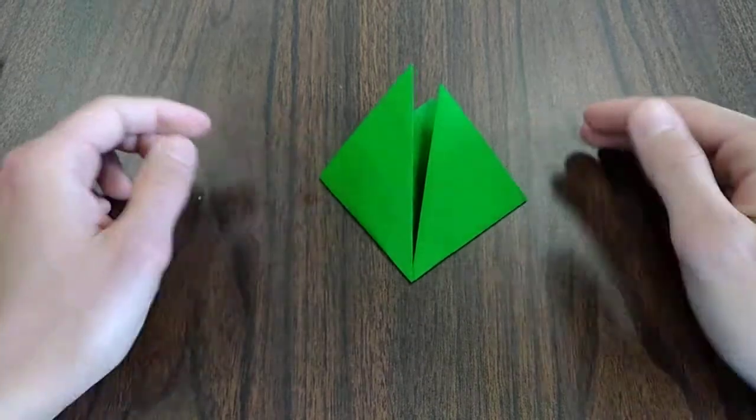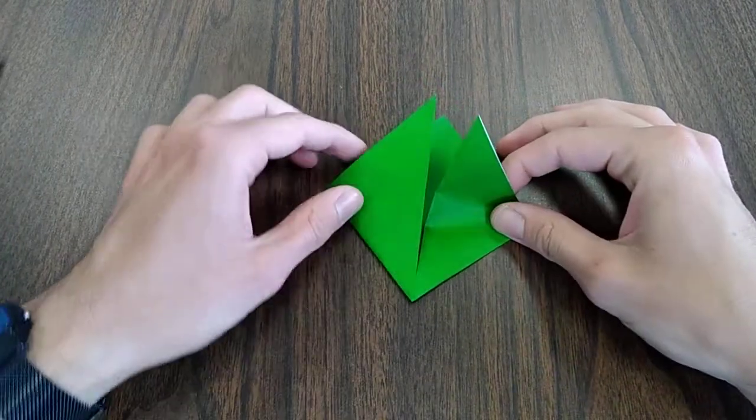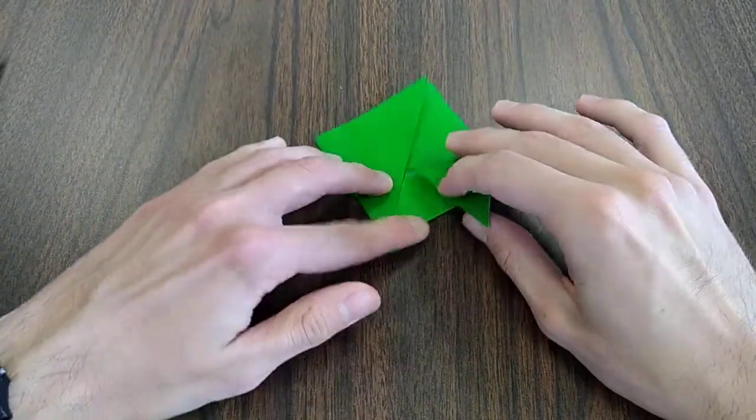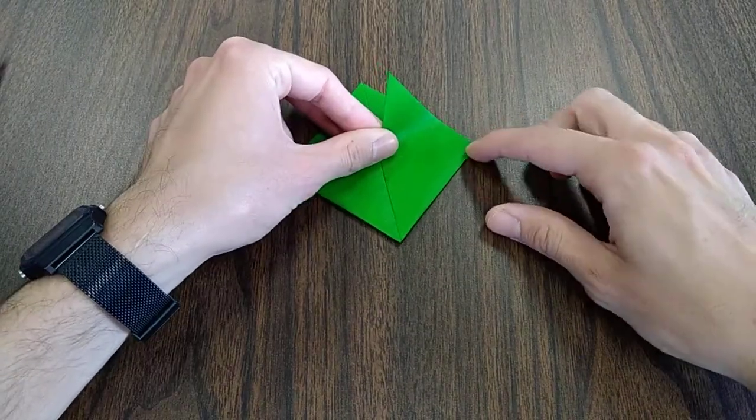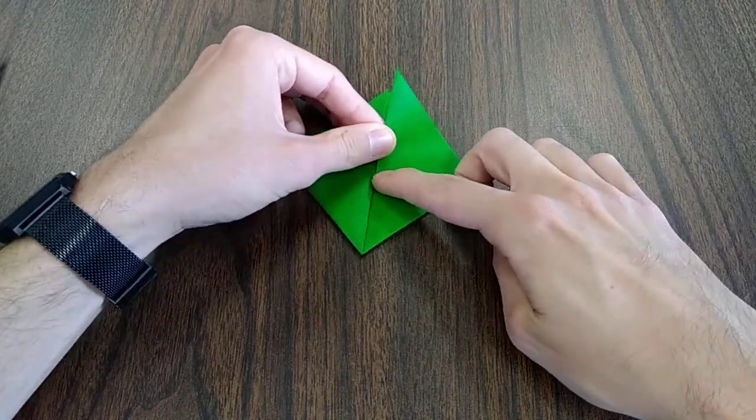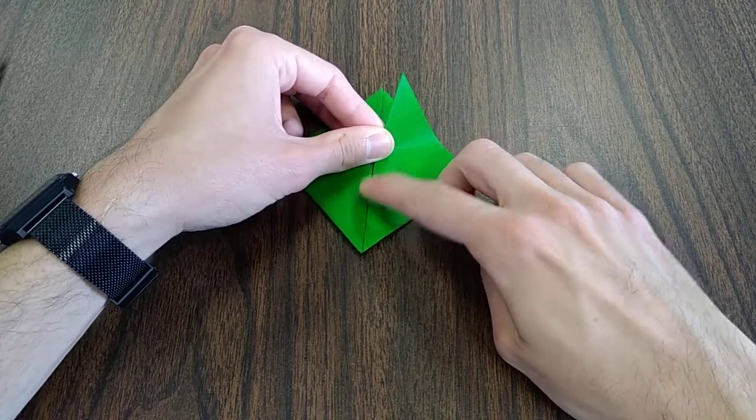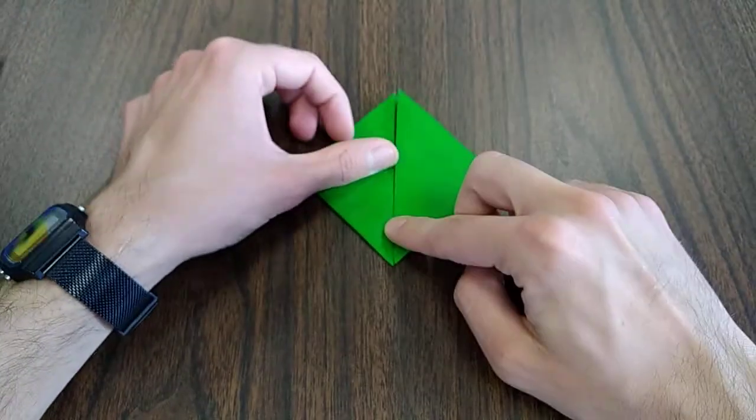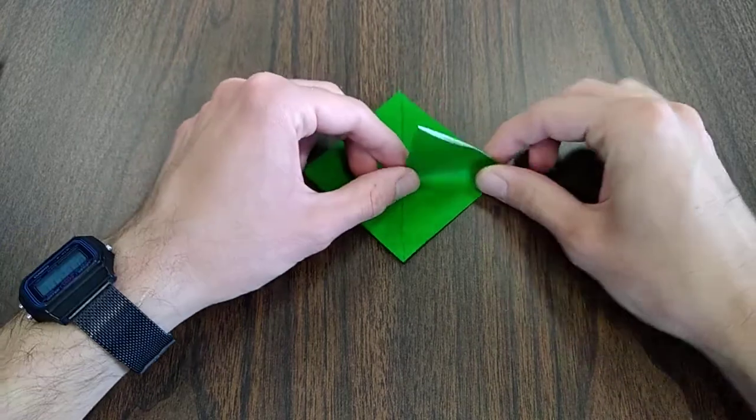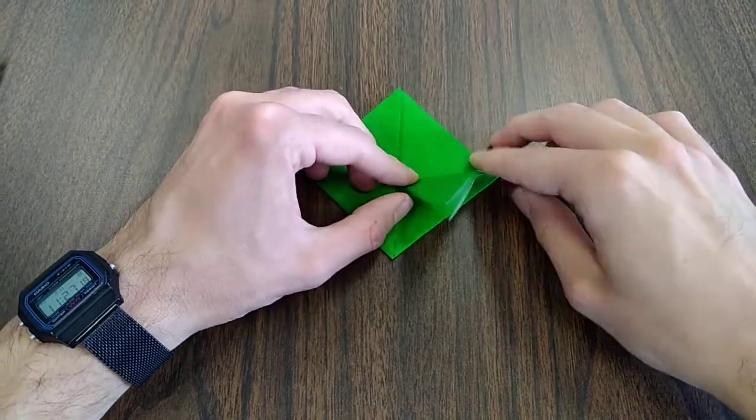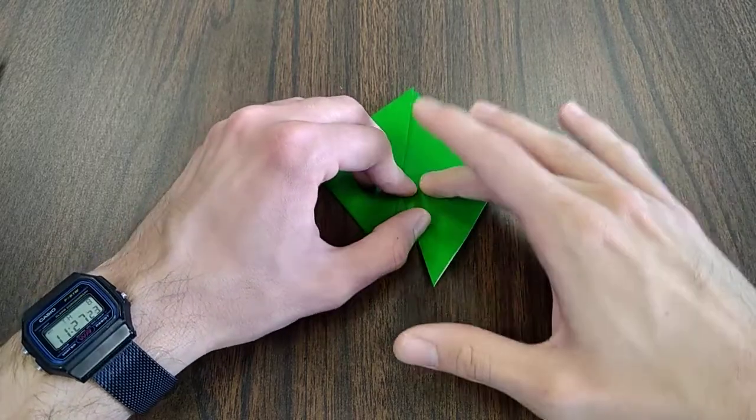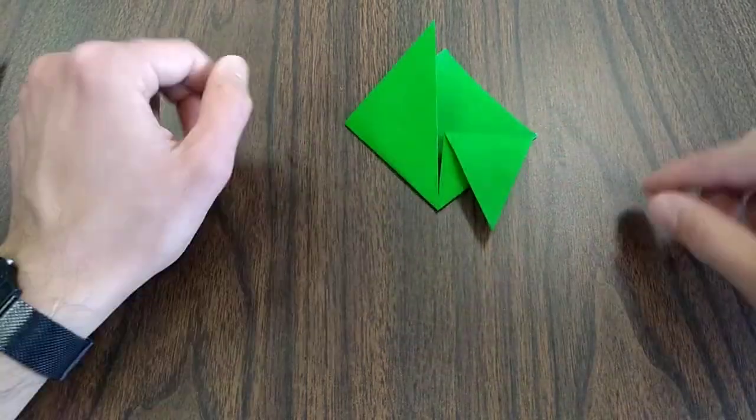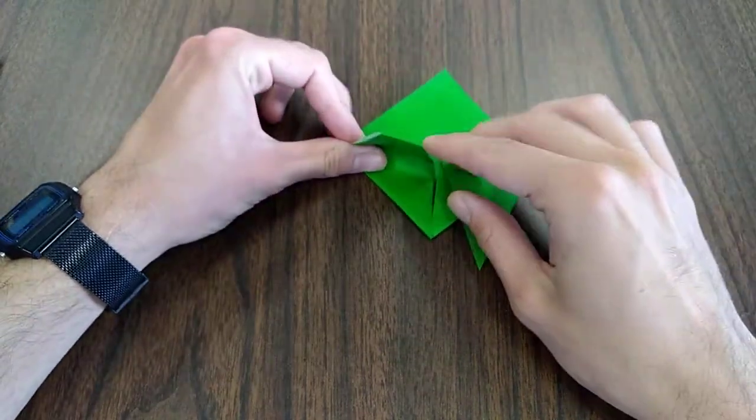Now we're going to fold both the right and left flaps down to make the wings. So the crease is going to run from this corner down to about just a little bit below the halfway mark here, just like this. Now we'll make the left match.